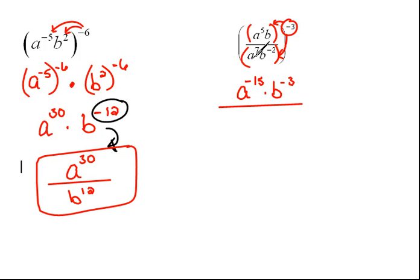now here on bottom, I've got a to the seventh raised to the negative third, which would be a to the negative twenty-one. And we have b to the negative two raised to the negative three, so don't forget to multiply those. Negative two times negative three would be a positive six.